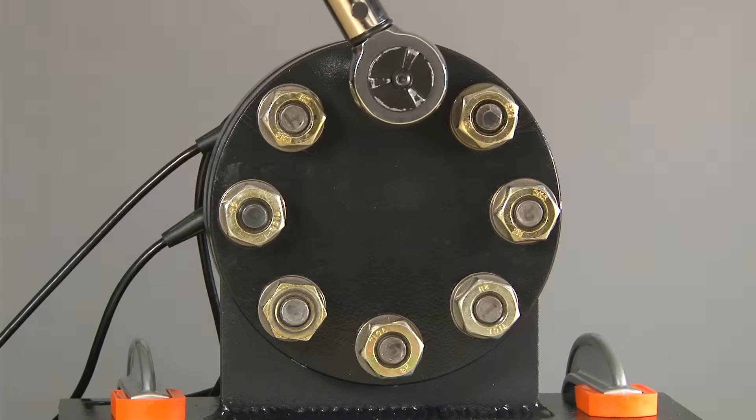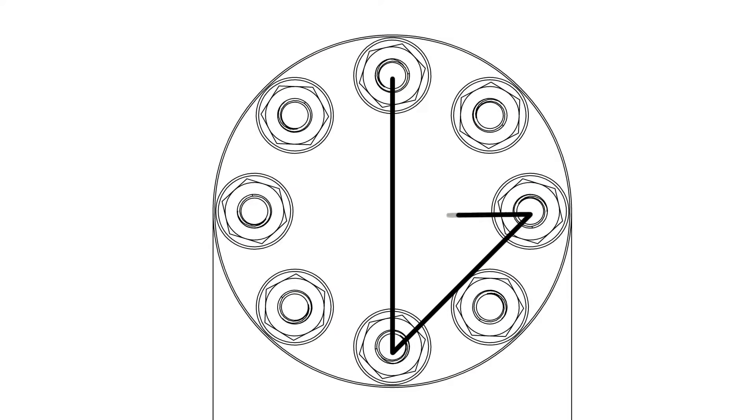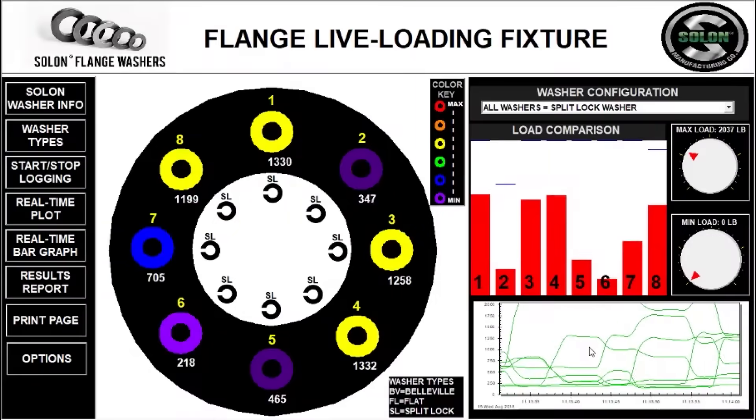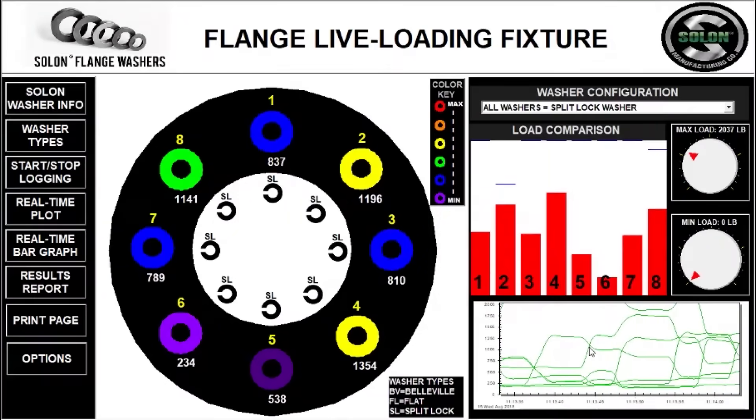The flange bolts are tightened in stages using an industry standard crossing pattern. We then torque the bolts at 100% using a clockwise pattern. As torque is applied, it is possible to monitor the preload on each bolt.